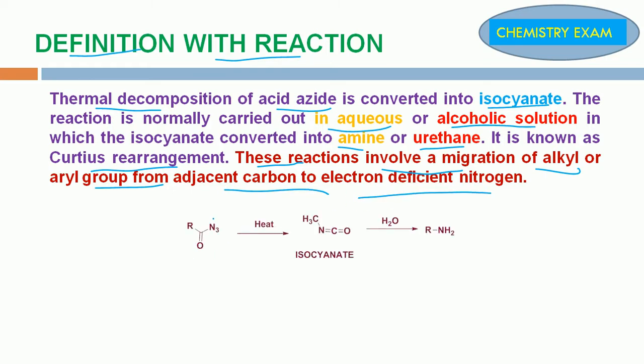Look at the reaction. Acid Azide by thermal decomposition forms Isocyanate. Isocyanate followed by hydrolysis forms Amine. This isocyanate in alcoholic condition forms Urethane. This Urethane followed by hydrolysis forms primary Amine.